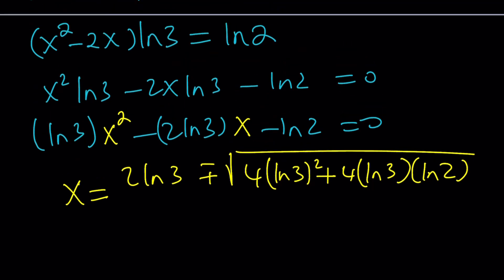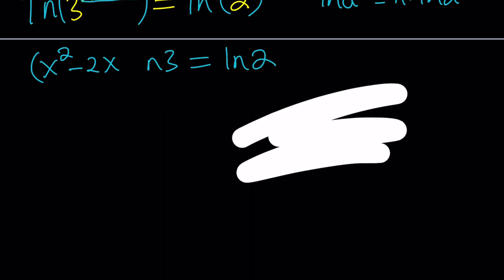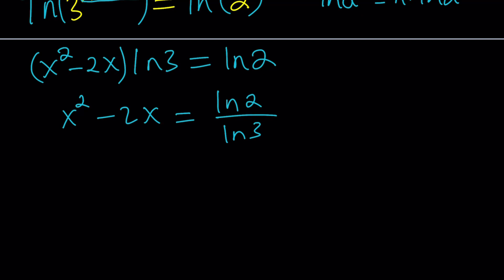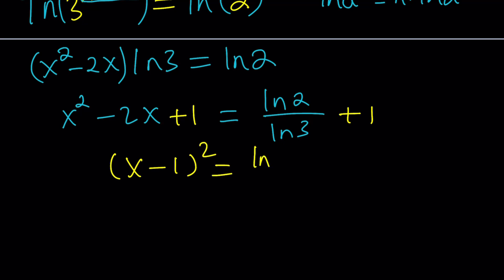If you go back, you're going to realize something really cool — we actually have a much simpler way to do it. If you pay attention to the expression, x squared minus 2x can actually be easily turned into a perfect square. So we're going to use the method of completing the square instead. I'm going to go ahead and add 1 to both sides, to get a perfect square on the left-hand side. That gives me x minus 1 squared. And here, if you make a common denominator, you're going to get ln 2 plus ln 3 divided by ln 3.